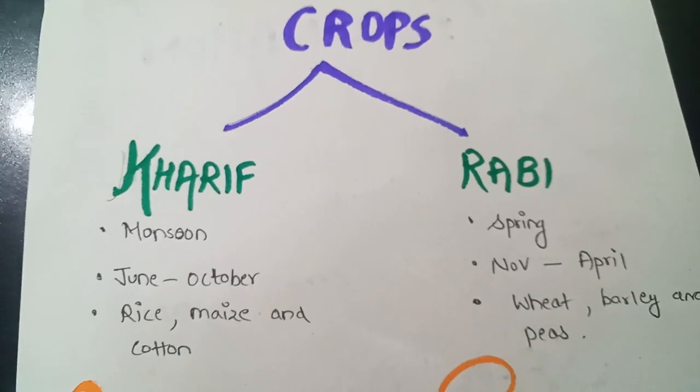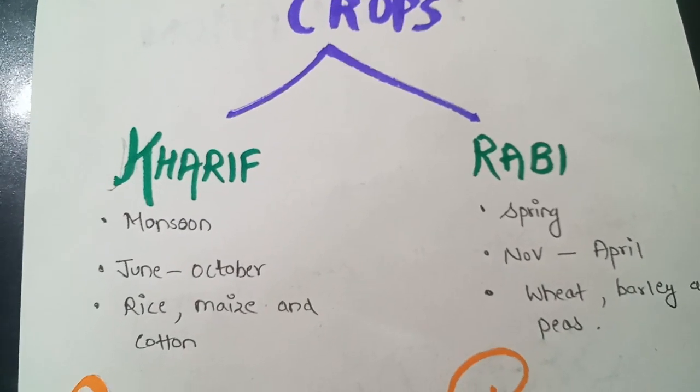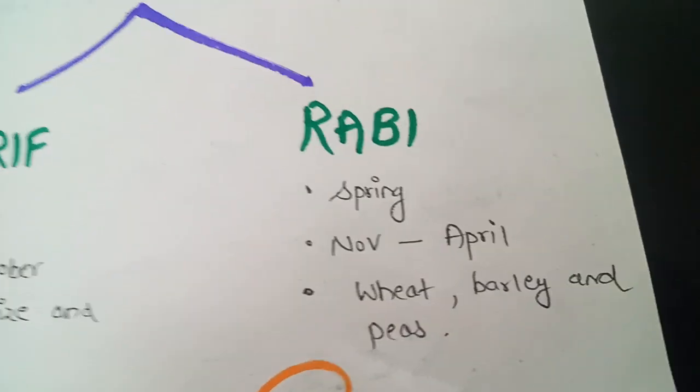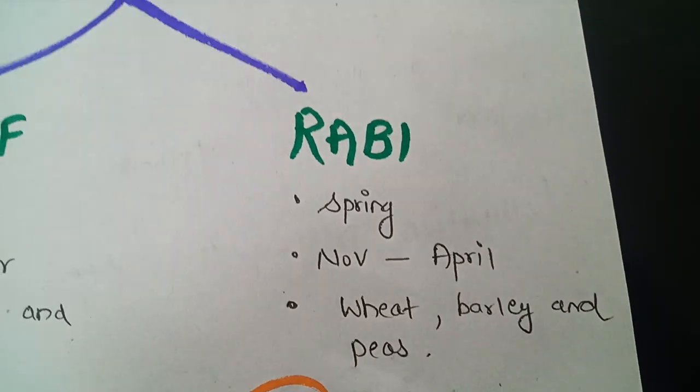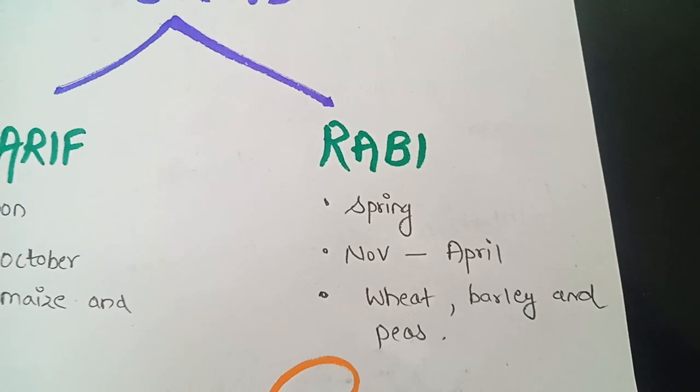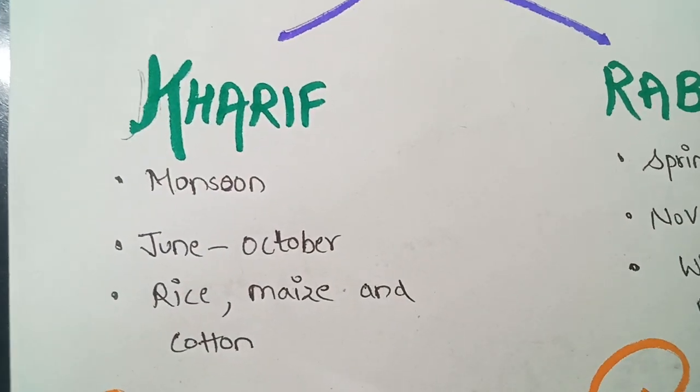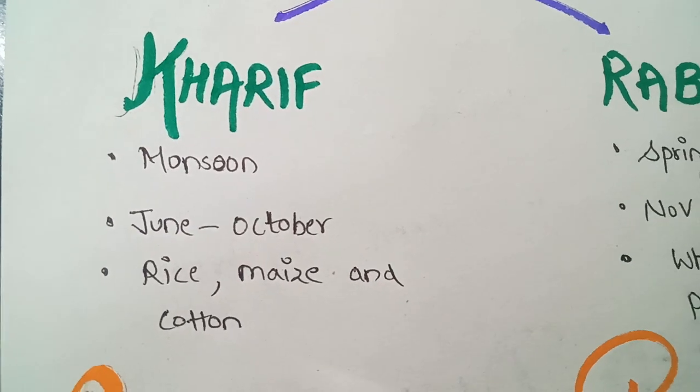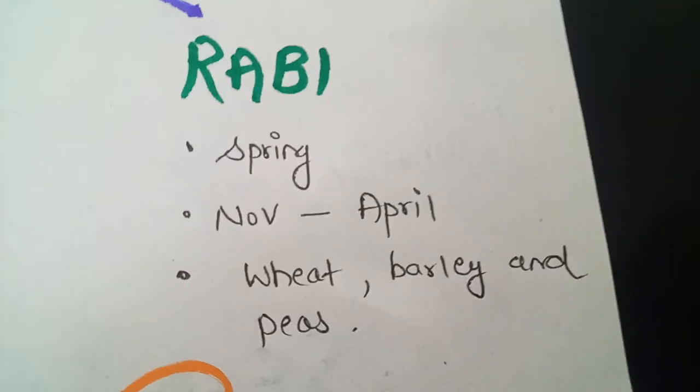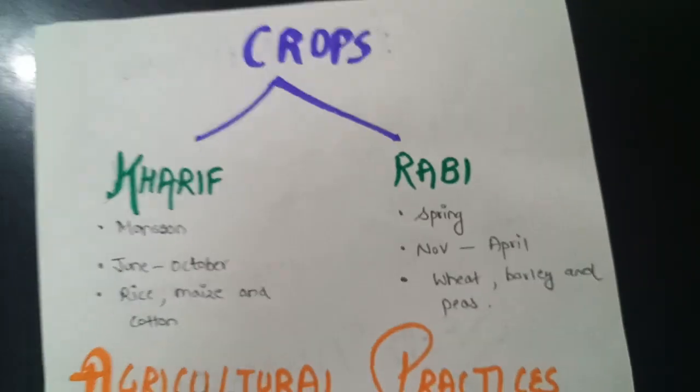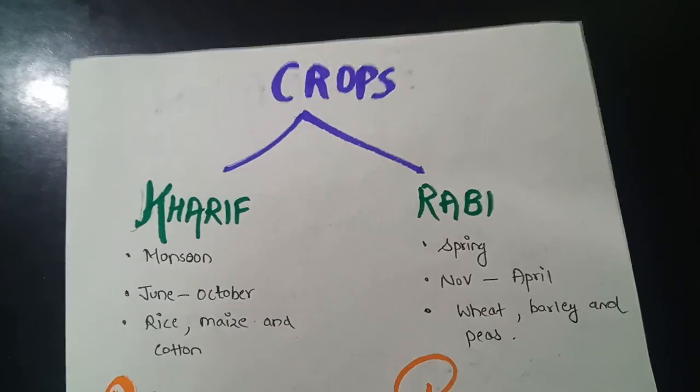Crops that are grown during June till October end is known as Kharif crops. And crops that are grown from November till April end, they are known as Rabi crops. And examples of Kharif crops are rice, maize and cotton. An example of Rabi crops are wheat, barley and peas. So both crops are very important.